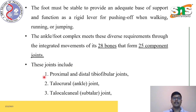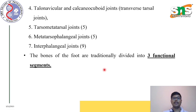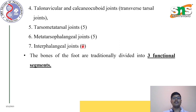The joints included in the ankle and foot complex are: the proximal and distal tibiofibular joints, talocrural or ankle joints, talocalcaneal or subtalar joints, talonavicular and calcaneocuboid joints (which together form the transverse tarsal joints), tarsometatarsal joints (five in number), metatarsophalangeal joints (five in number), and interphalangeal joints (nine in number).